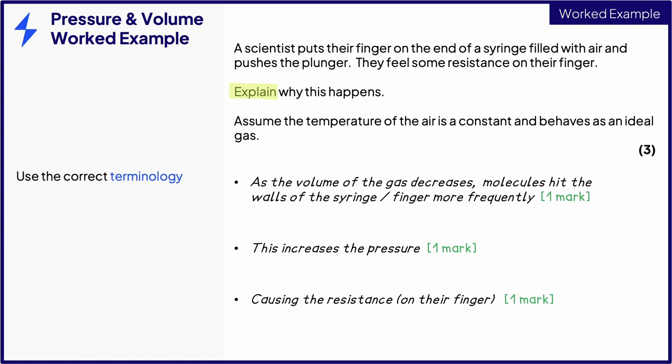Always use the correct terminology. For example, don't just say the molecules hit the syringe faster, as this is technically incorrect. Their speed does not change. It is better to say their rate of collision, or their frequency, as this is what contributes to the pressure. Make sure you always refer back to the scenario in the question where possible.